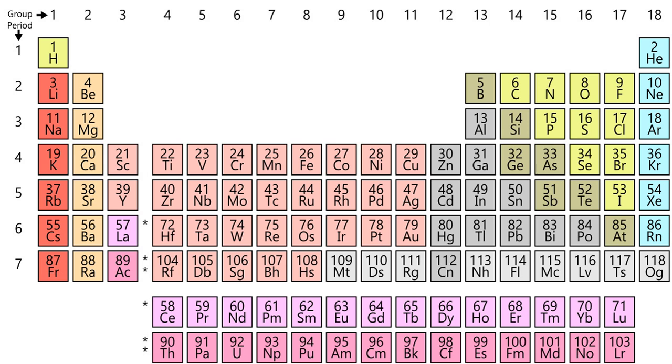A single element can form multiple substances differing in their structure, they are called allotropes of the element. When different elements are chemically combined, with the atoms held together by chemical bonds, they form chemical compounds.